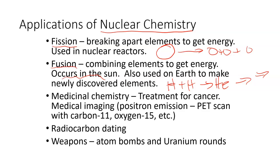Nuclear chemistry is also used in medicinal chemistry for treatments. The most common one people think about is treatment for cancer, but there are a variety of other treatments as well. It's also used in various medical imaging, such as PET scans — positron emission tomography — using carbon-11 and oxygen-15, among other isotopes.